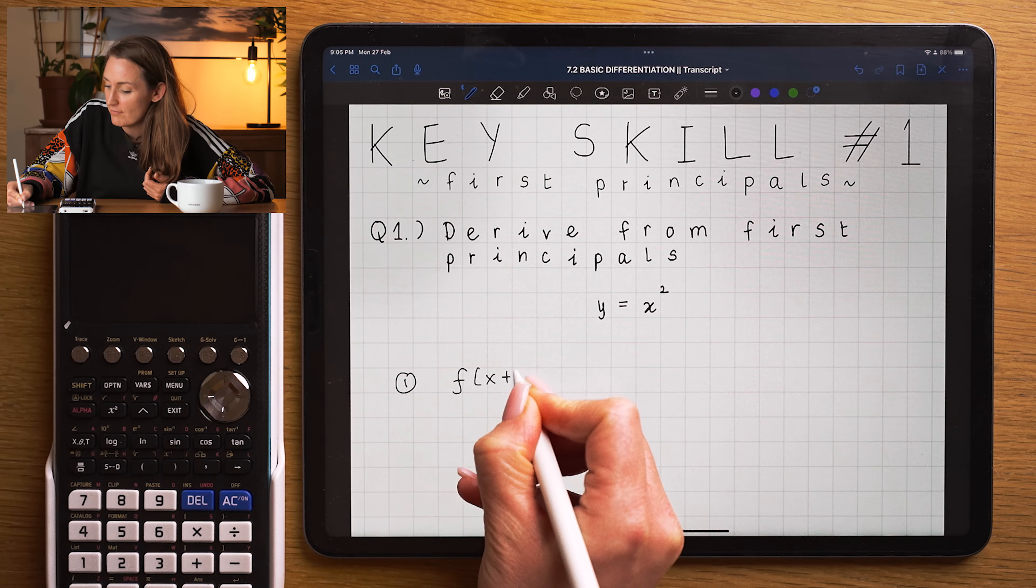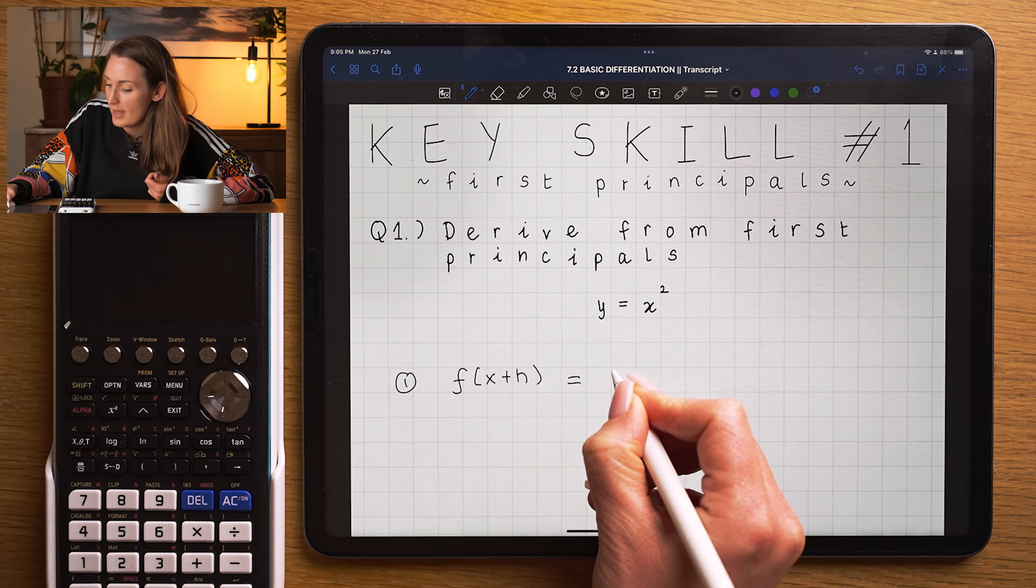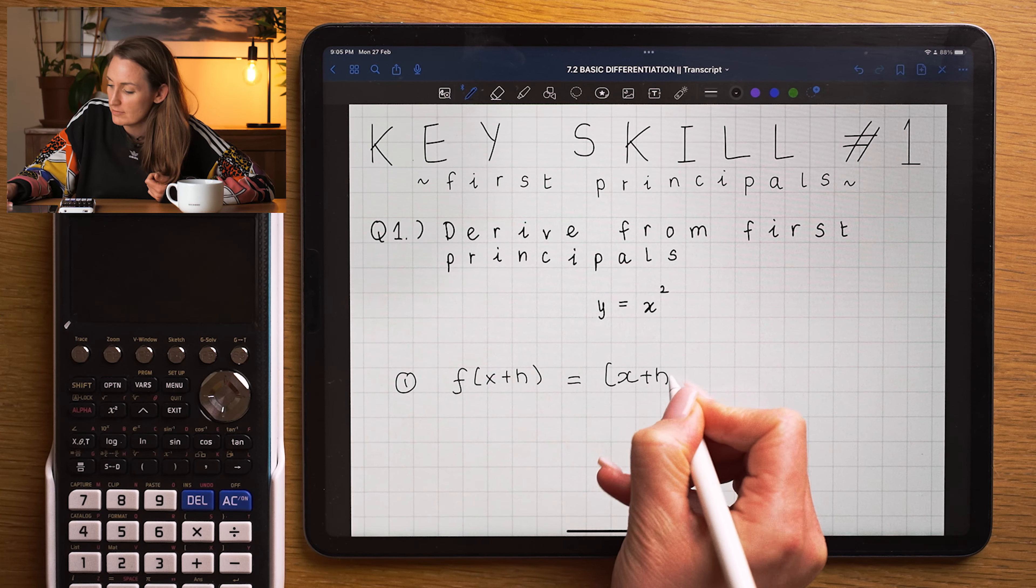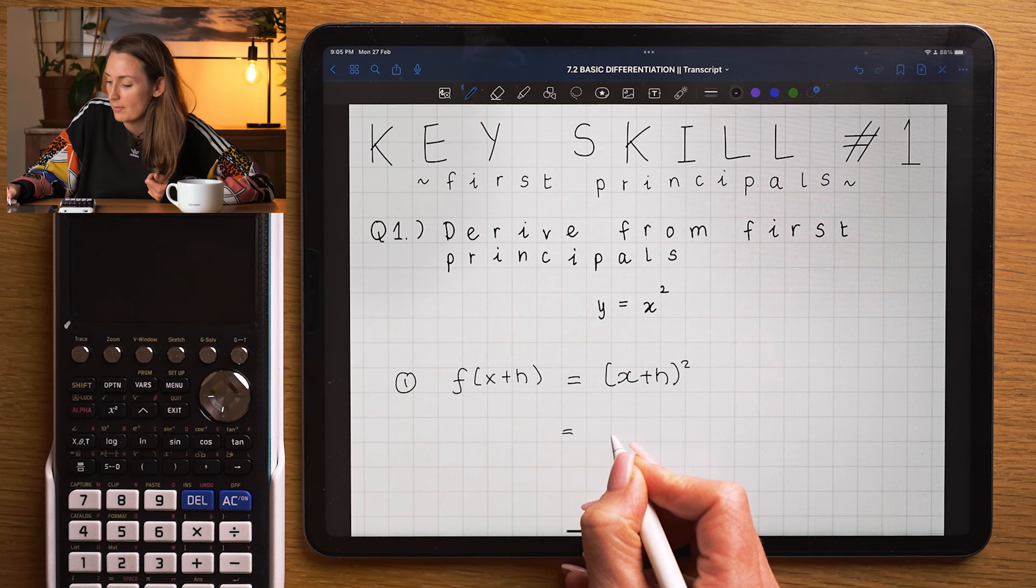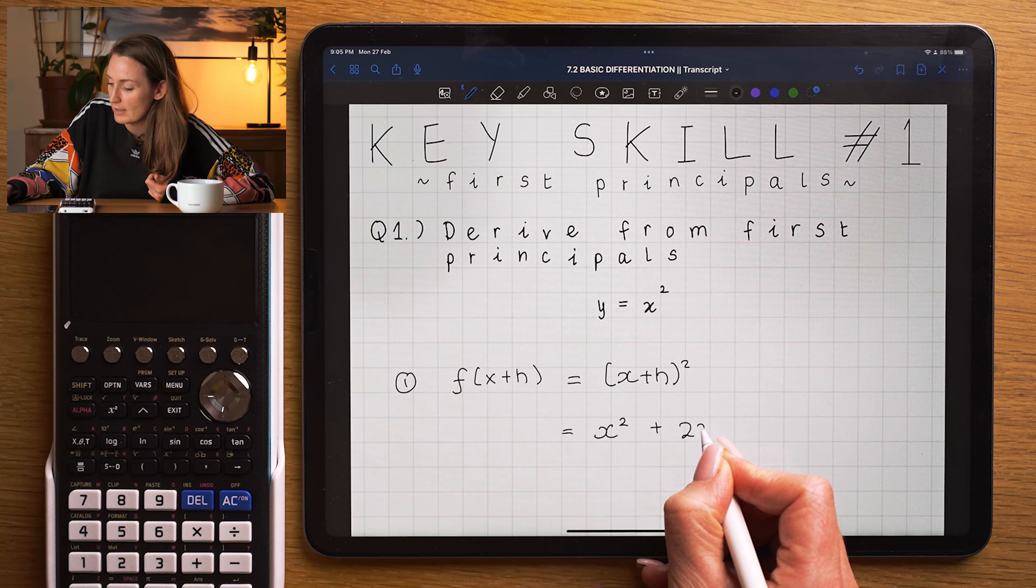First principle, step one, you have to find f of x plus h, and in this case, x plus h squared. I'm going to expand that really fast using the binomial expansion.